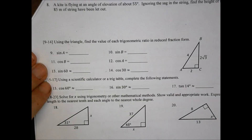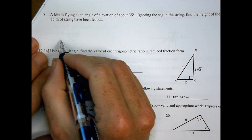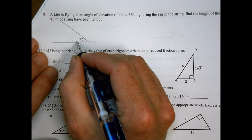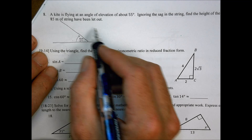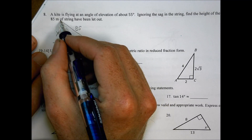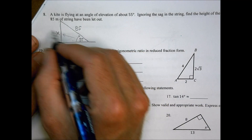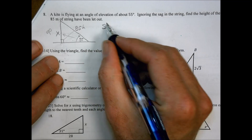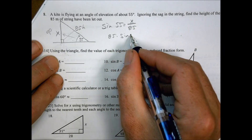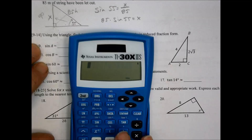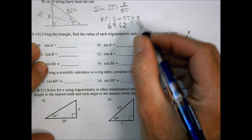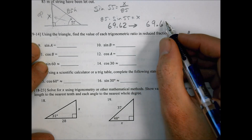Number 8: a kite is flying at an angle of elevation of about 55 degrees. Someone on the ground is holding it, and 85 meters of string has been used. Ignoring the sag in the string, find the height of the kite. We have an opposite and a hypotenuse, so sin(55°) = x/85. Therefore x = 85 × sin(55°) = 69.62, which rounds to 69.6 meters.